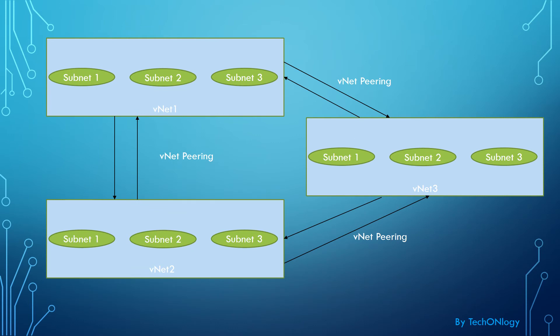This diagram shows that when we have three VNets, any communication between them requires a VNet peering between each pair. If VNet 1 wants to talk to VNet 2, there must be a peering between them, and if VNet 1 also wants to talk to VNet 3, another peering is required. As the number of VNets increases, this becomes a problem — it turns into a mesh topology where every VNet must peer with every other VNet, resulting in too many peering connections.